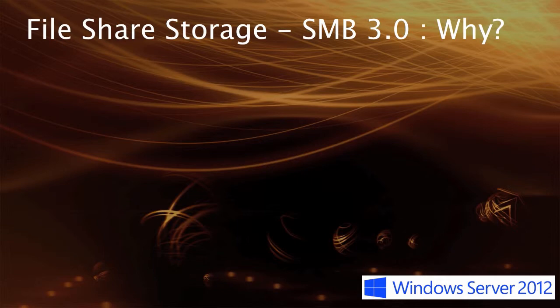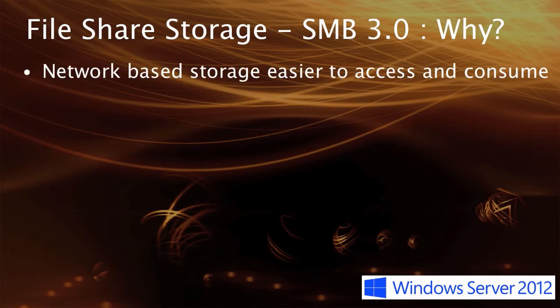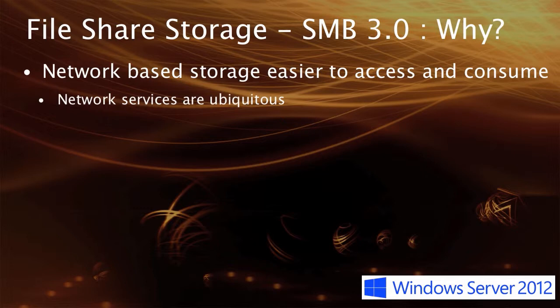Historically, Windows has used SMB, also referred to as CIFS in a lot of instances, as a network sharing interface. SMB 3 effectively allows us to continue that process of being able to access file-based services. It's easy to consume connectivity in this way and people are fairly familiar with it. It's a network-based service and so it's ubiquitous.